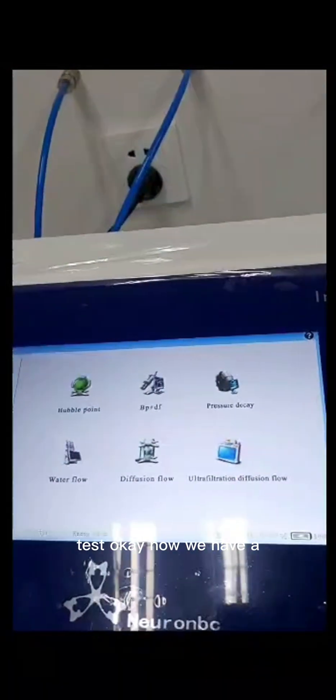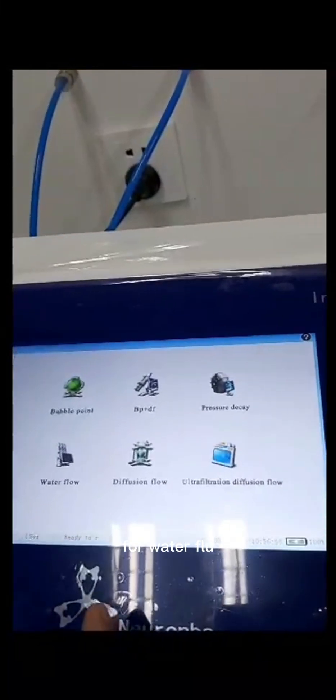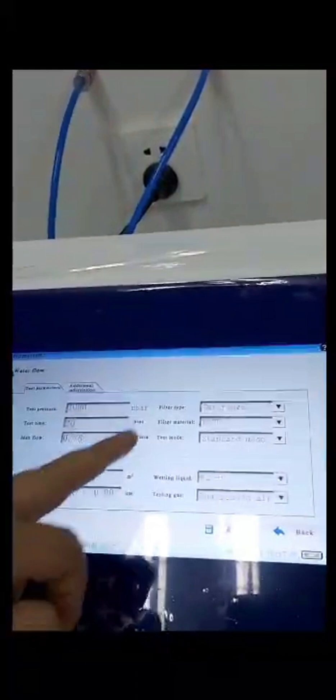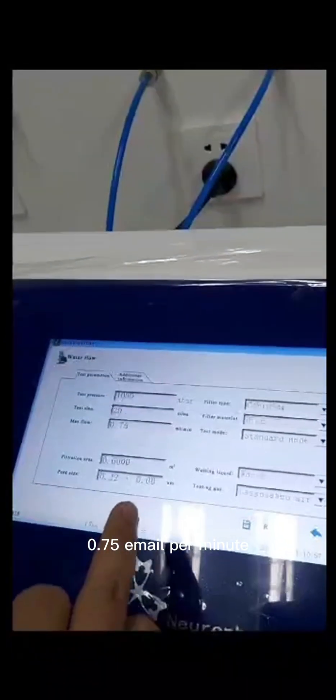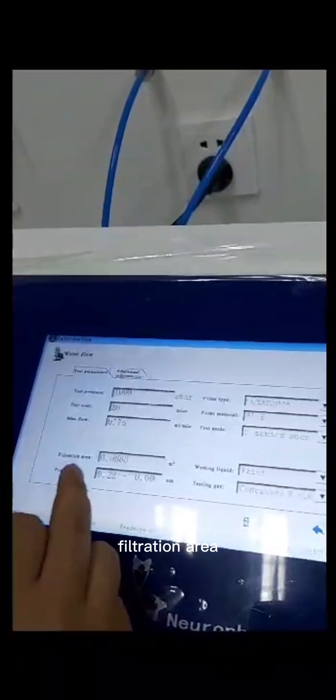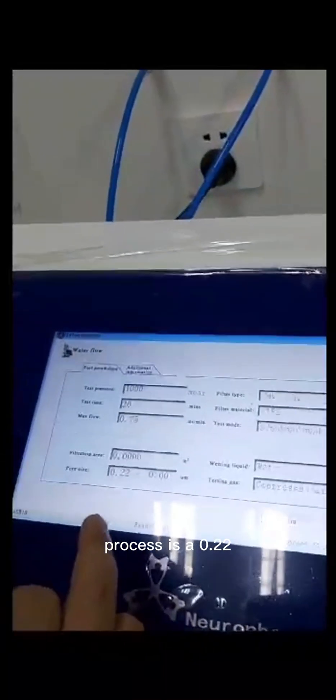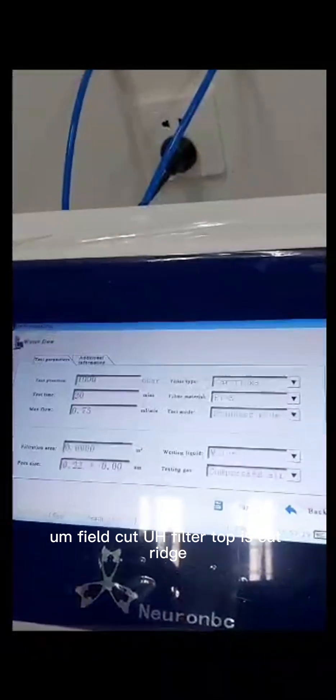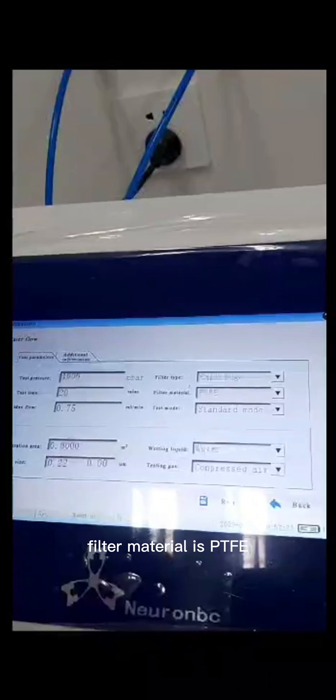Now we have the test for water flow. Water flow. That's the test pressure is 1000 m bar. Test time is 20 minutes. Max flow is 0.75 ml per minute. And the filtration area, 0.6 square meters. Flow size is 0.22 U.M. Filter tap is catalytic.